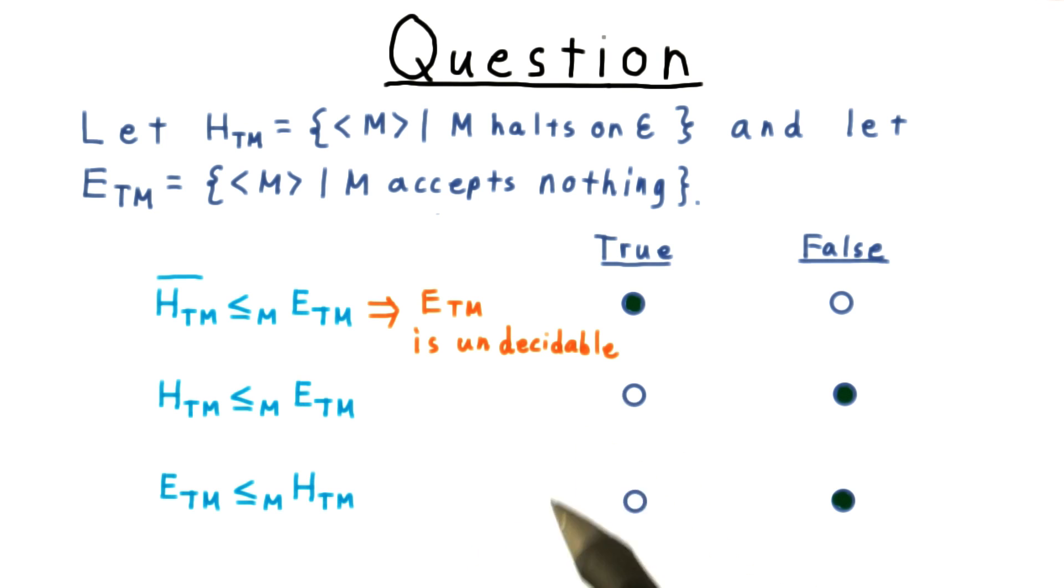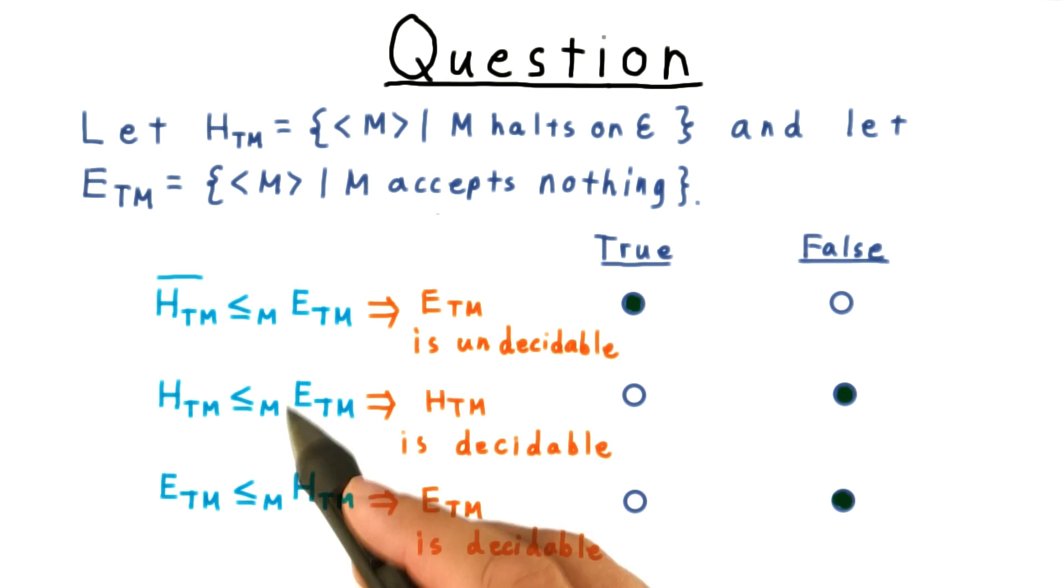But proof by lack of imagination isn't very satisfactory. So let's actually show that if these statements were true, then we would get a contradiction. If we could find these reductions, then this one would directly imply that the halting problem is decidable, and this last one would imply that the empty problem is decidable.